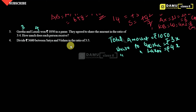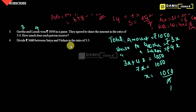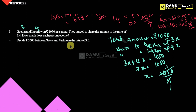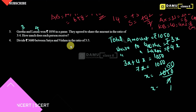If you add the 3x amount and the 4x amount, 3x plus 4x will be equal to 1,050. Then 7x will be equal to 1,050. Then x will be equal to 1,050 by 7, which gives x equal to 150.